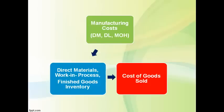The three product costs become inventory first, and the three types of inventory are reported on the balance sheet. Finished goods inventory moves to cost of goods sold when the product is sold. At the end of the period, product costs are reported either as inventory or as cost of goods sold, and some of the costs are reported in each.